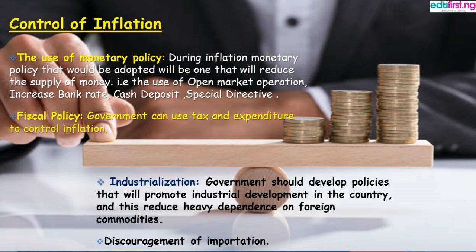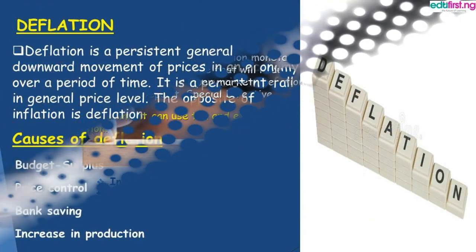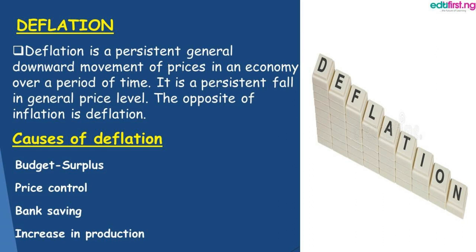The second measure is fiscal policy. The government can use tax and other tools to control inflation and reduce money in circulation. Thirdly, government would promote industrial development in the country — this is called industrialization. Industrialization will reduce heavy dependence on foreign commodities, and lastly, government should look for ways to discourage importation.